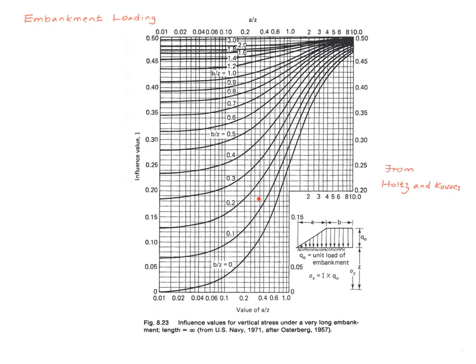This chart corresponds to a loading that looks like this. The loading consists of a linear part and a constant part. The chart gives you the influence value based on the geometrical parameters that you see in the picture here, which are little a, little b, and the depth z.